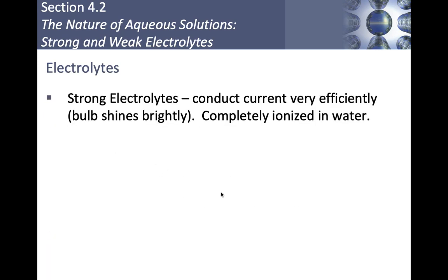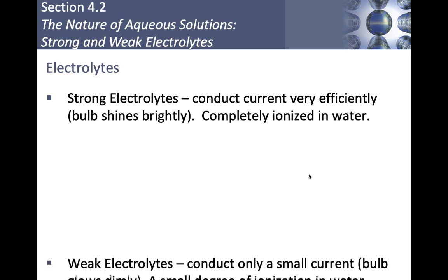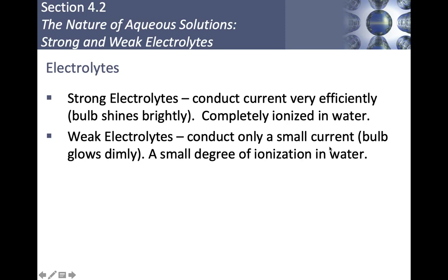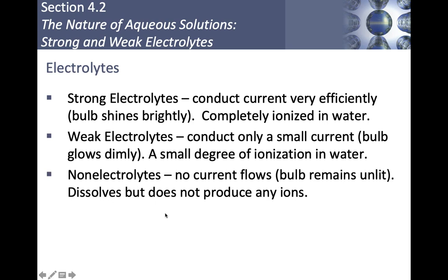A strong electrolyte conducts current very efficiently — if you stuck a light bulb in, it would shine brightly — because the substance completely ionizes when it hits water, totally breaking apart into positive and negative charges. A weak electrolyte conducts only a small amount of electricity, meaning there is some degree of ionization but not 100% like a strong electrolyte. Some things dissolve in water but don't produce any current at all because they don't form ions — those are non-electrolytes.